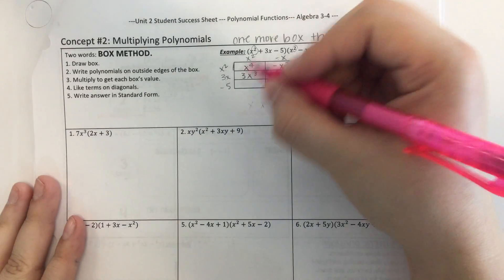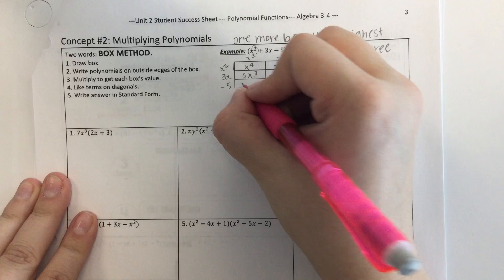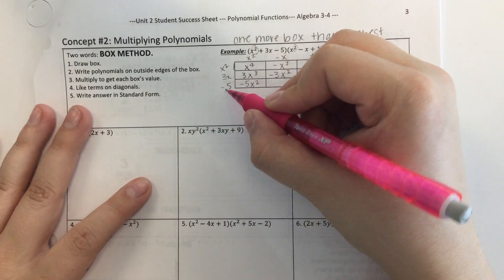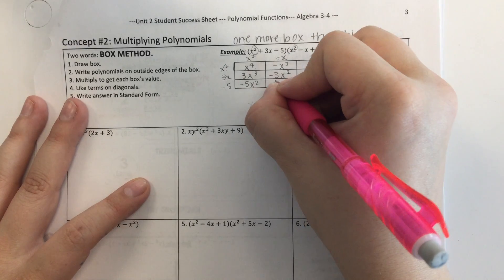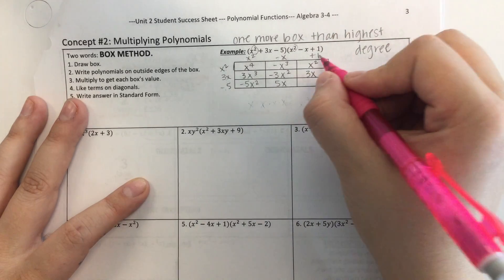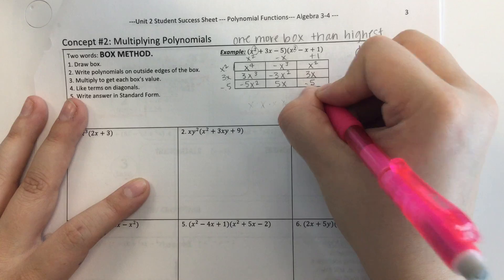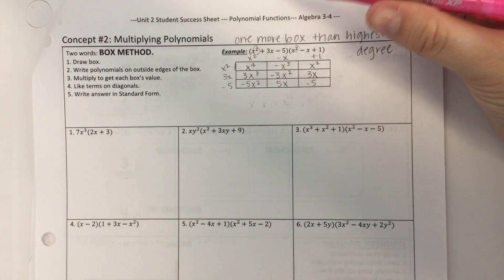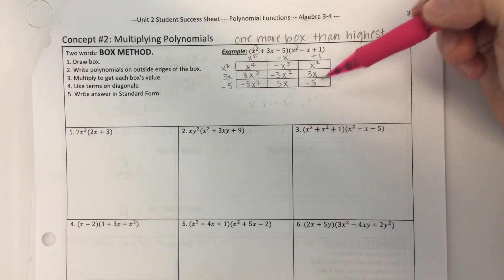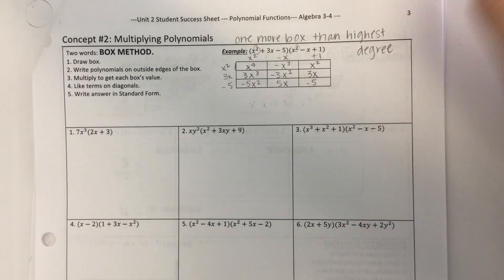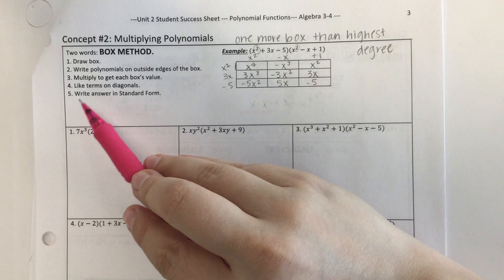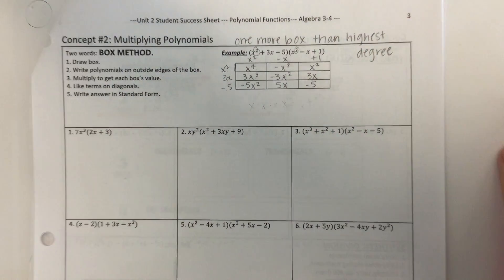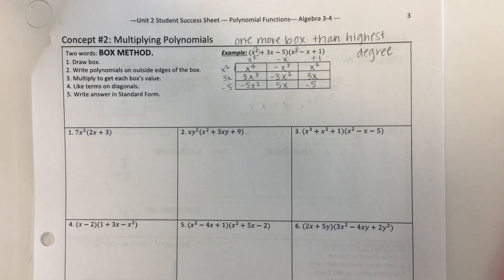3x times negative x is negative 3x squared. And then 1 times 3x is just 3x. And now we're on the bottom row. Negative 5 times x squared is negative 5x squared. Negative 5 times negative x gives me a positive 5x. And then 1 times negative 5 is negative 5. We're done filling out the box. Now, how are we going to add all these things together? Your like terms are on the diagonals going from top right to bottom left.